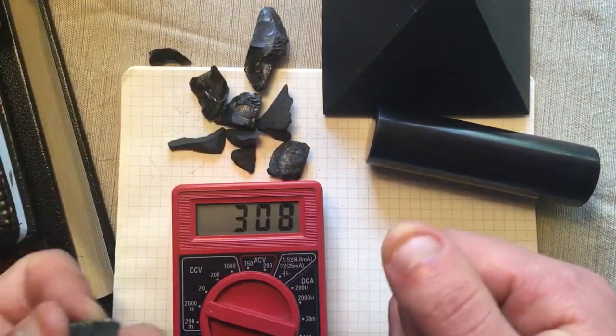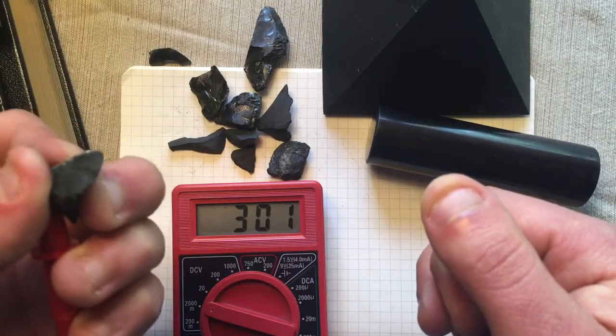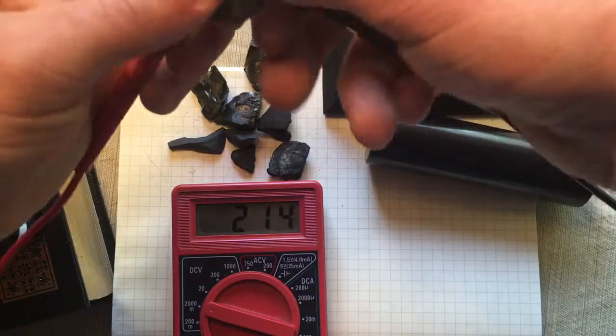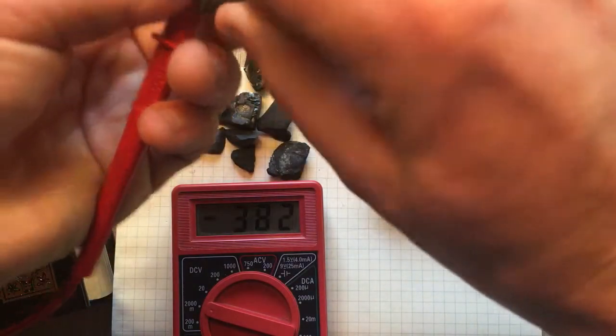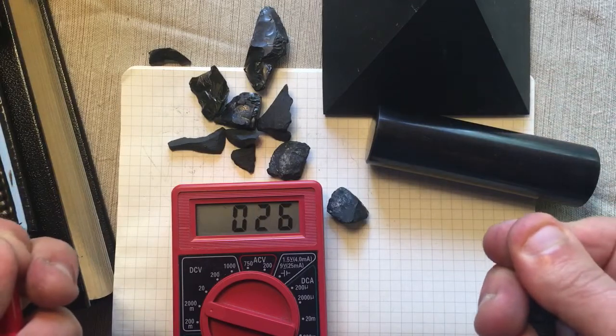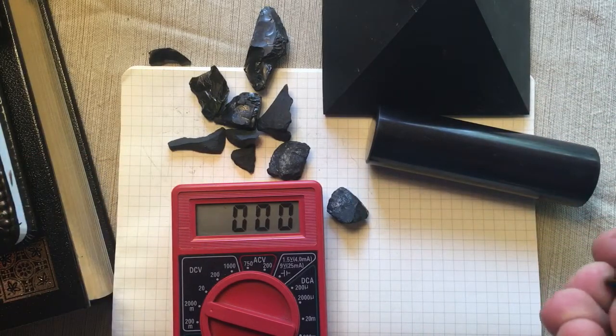The bigger voltage increase comes from the type 3 shungite than from the type 1. Thanks for watching.